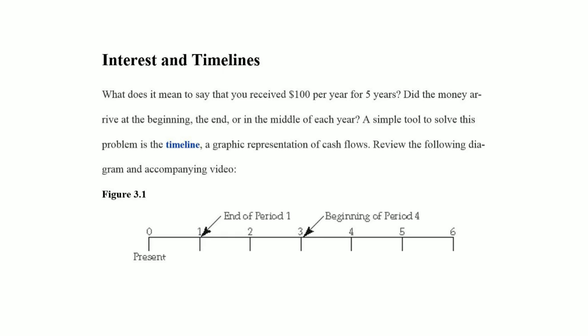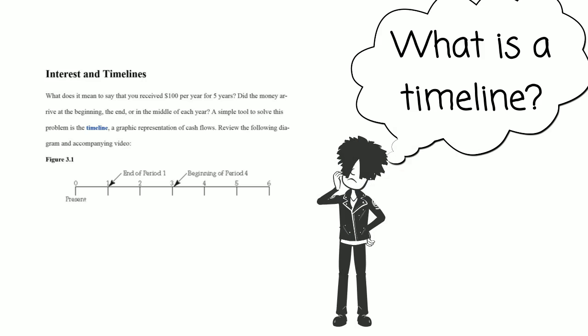For example, in Chapter 3 of CFO, the first section is titled Interest in Timelines. You could ask yourself a question like, what is a timeline? Use the list of learning objectives at the start of the chapter to form questions. Forming questions builds curiosity, which will help motivate you through the reading.